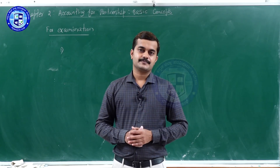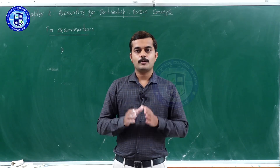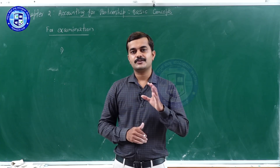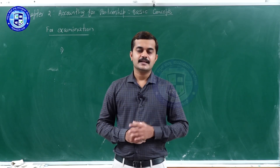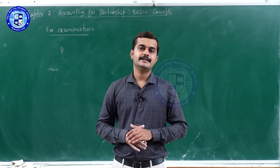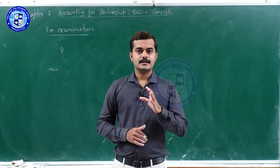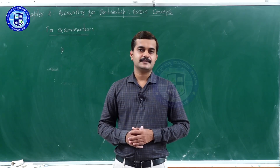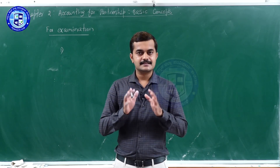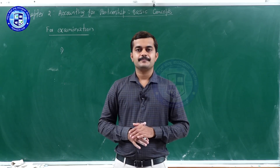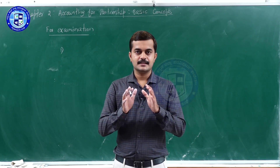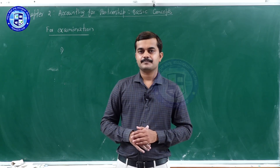Second, interest on capital: in the absence of a partnership deed, no partners are entitled to receive any interest on their capitals. Third, interest on drawings: no interest is charged on drawings made by partners if the partnership deed is silent. Fourth, interest on advances from partners: when the deed is silent, interest is allowed at 6% per annum on such advances. Fifth, remuneration to partners: when the deed is silent, no partner is entitled to receive any salary or remuneration for the firm's work. This is the first practical oriented question for Section E for 5 marks.